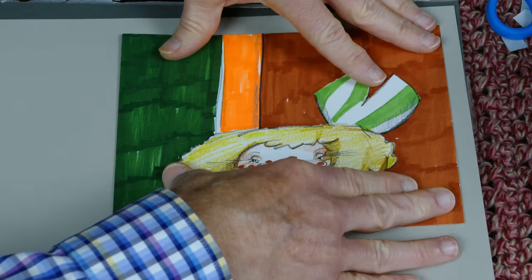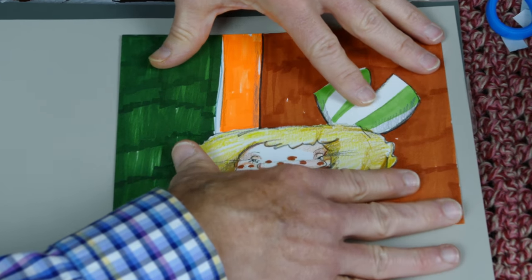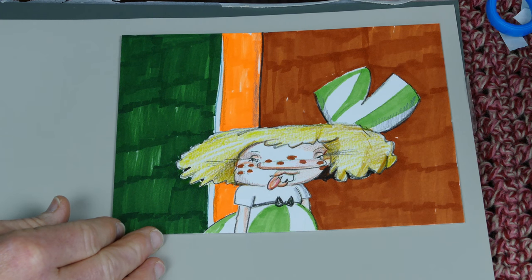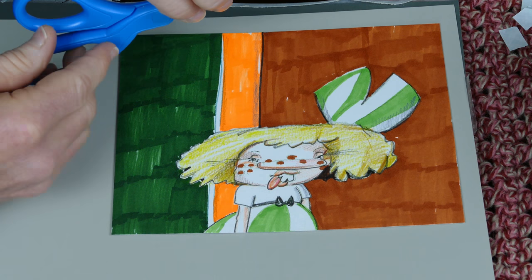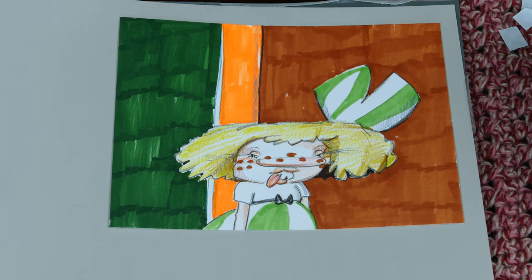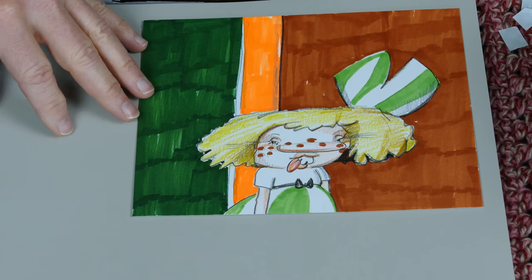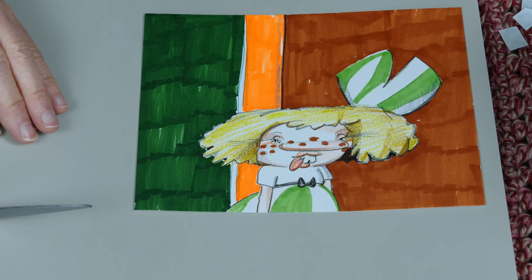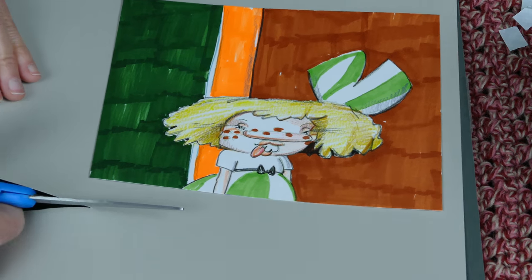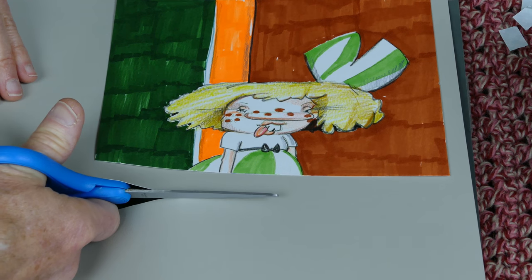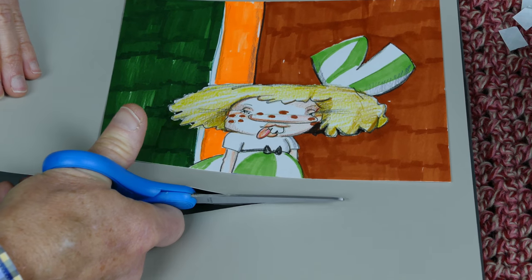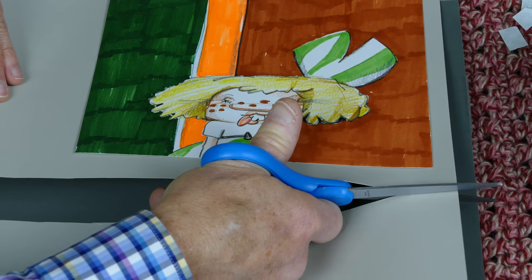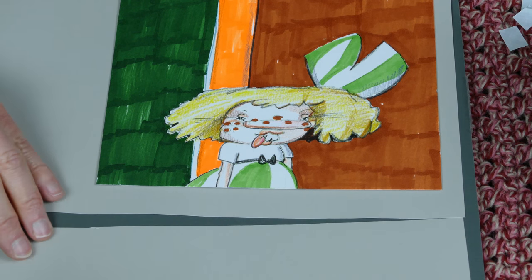You could also create a beautiful koa wood frame and send it to me. I can tell you the size if you would like. And I will put your koa frame around this beautiful mounted doodle.